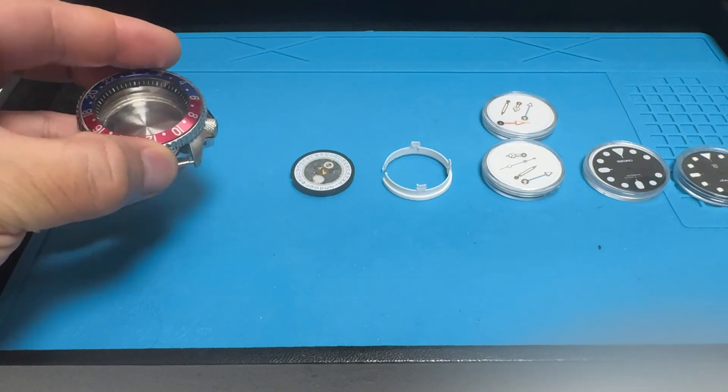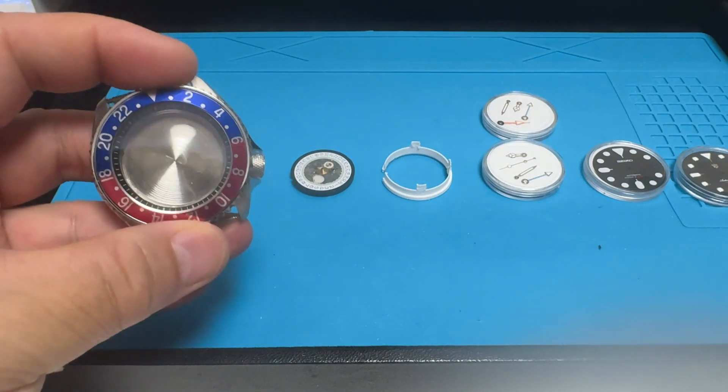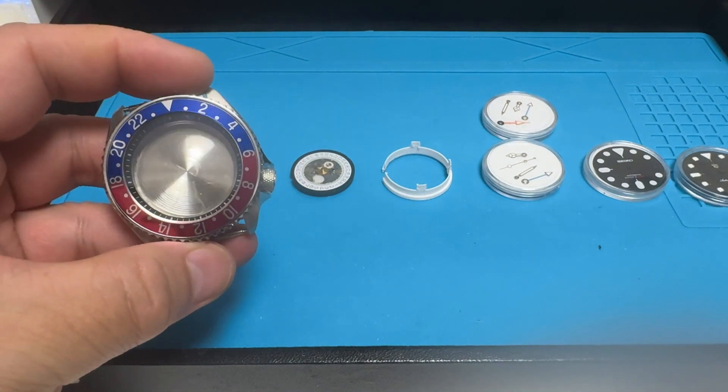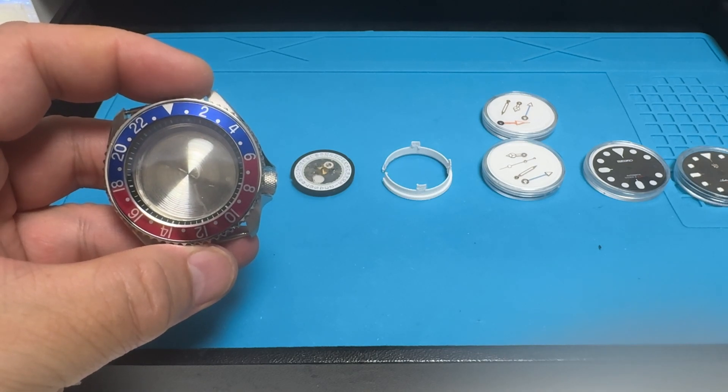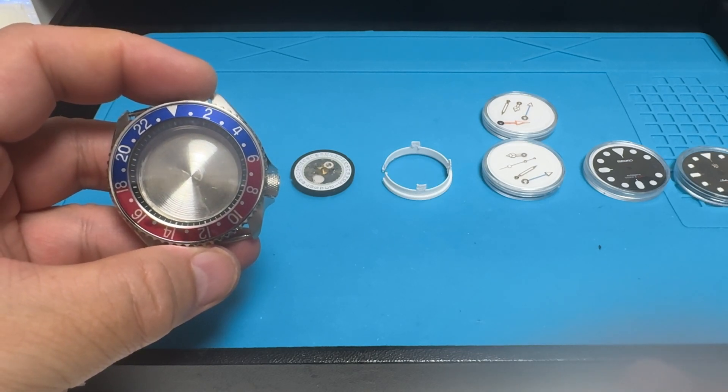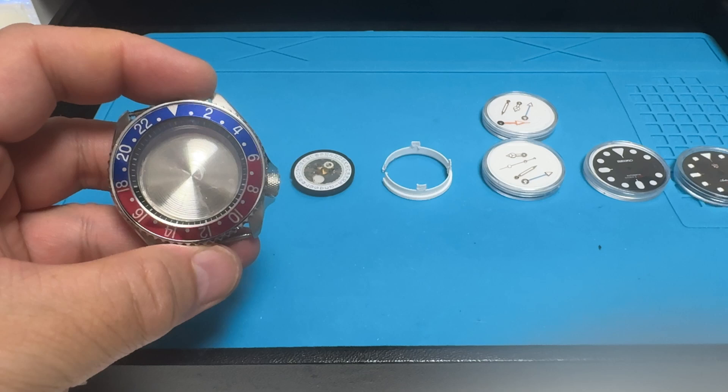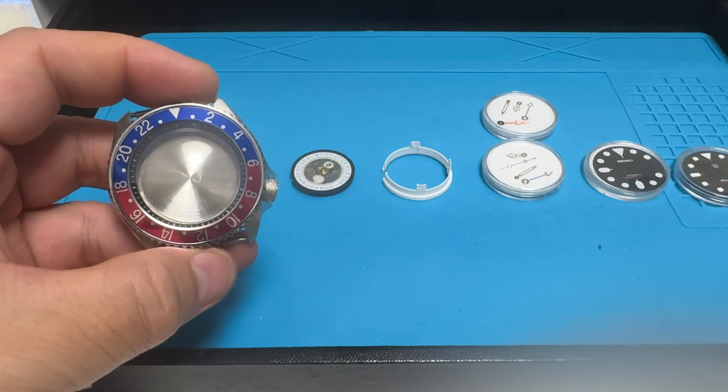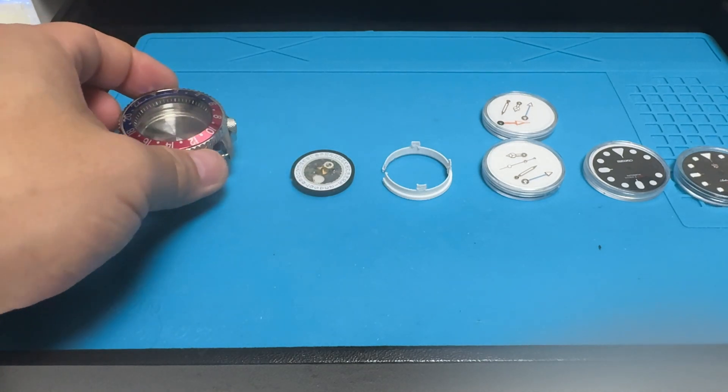Let's start off with the parts list. This is your typical SKX or SRPD or SSK style case with the crown at the 3.8 position. This one is made out of stainless steel with a sapphire crystal as well as a 24-hour bezel insert.